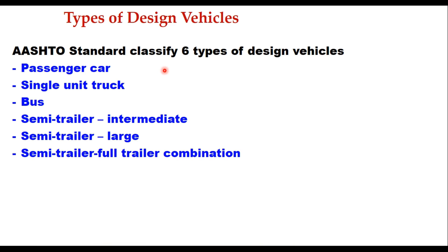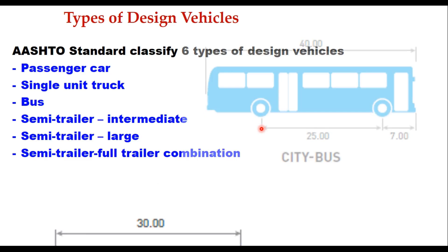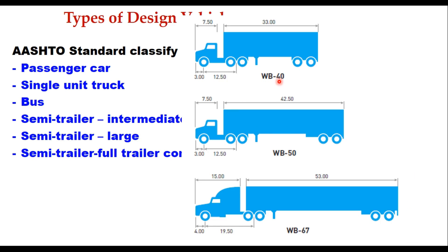AASHTO standards classify six types of design vehicles: passenger car, single unit truck, bus, semi-trailer intermediate, semi-trailer large, and semi-trailer full trailer combinations. A single unit truck is 30 feet in length having two wheels at the front and two or four wheels at the rear. A bus is 40 feet long with a wheelbase of 25 feet. A semi-trailer can be of WB40, WB50, or WB67, where this number indicates the total length of the vehicle — so it is a semi-trailer intermediate, large, and a combination.